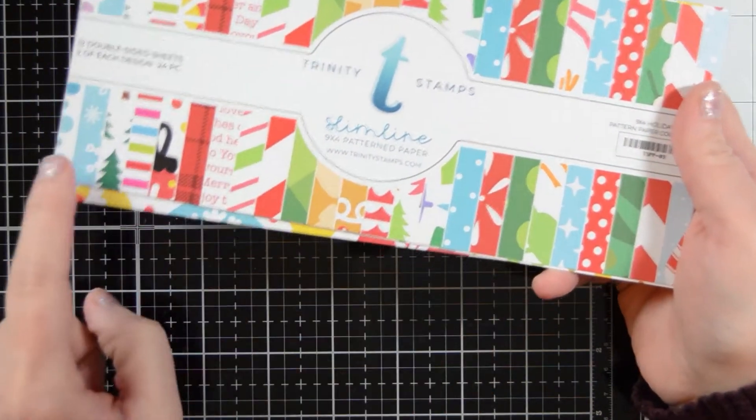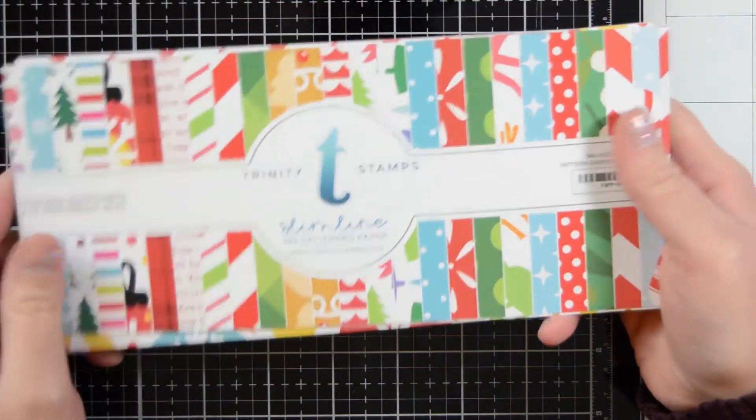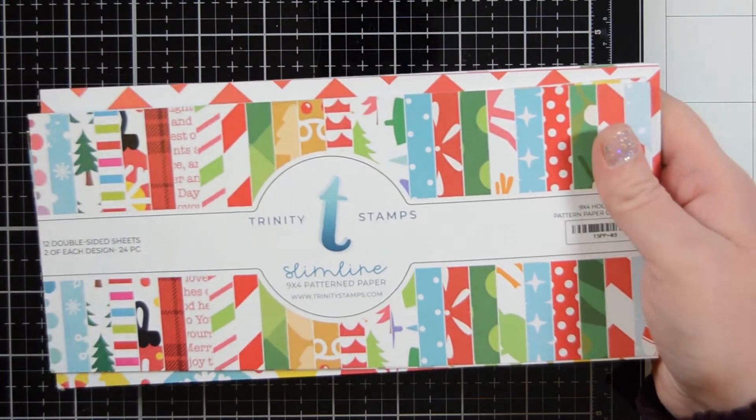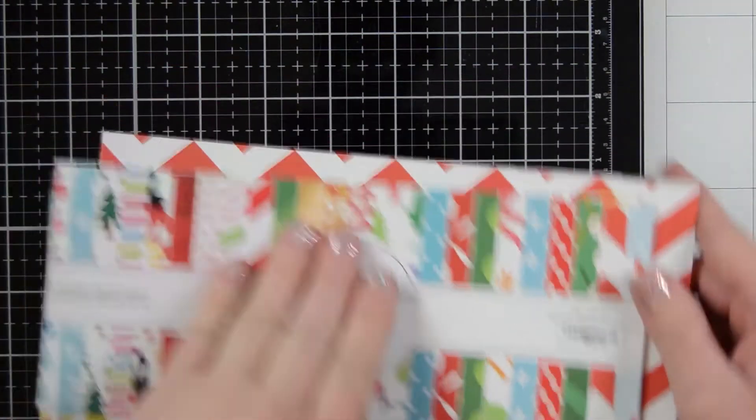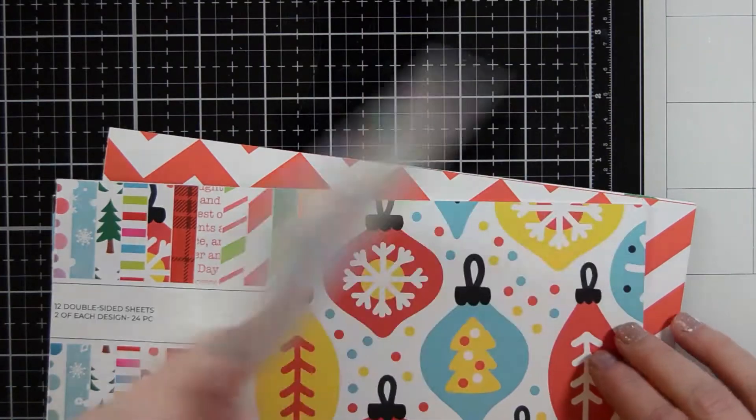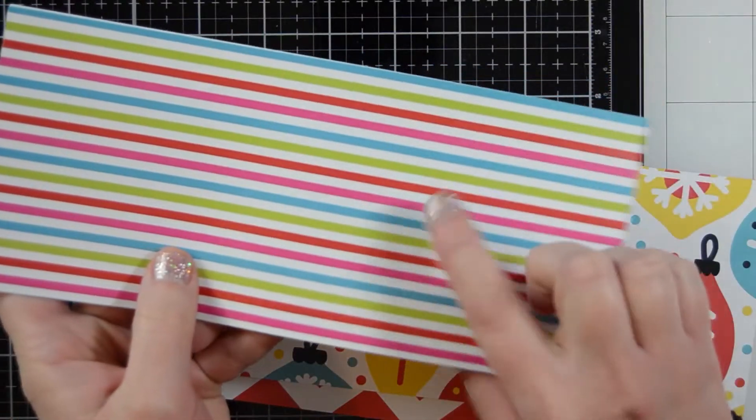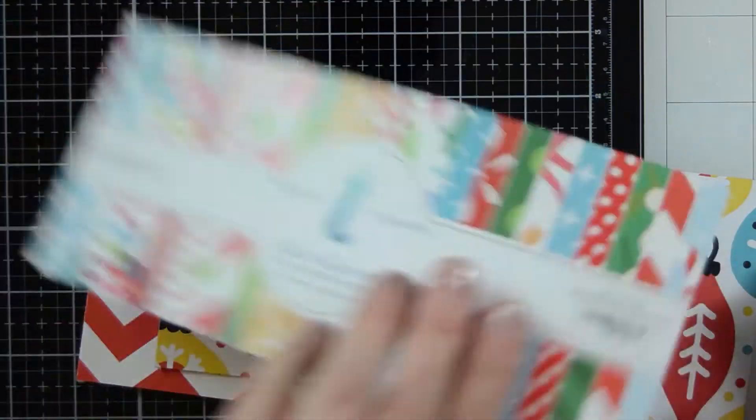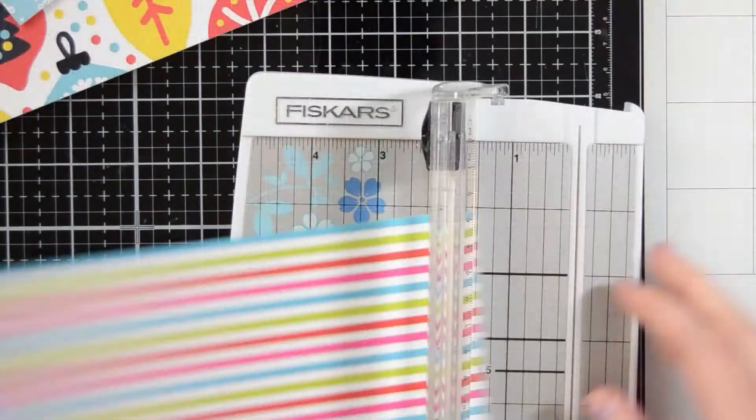So next I'm going to be using some paper from this slimline paper pad. Some of those blues in there I've used as well and then I'm also going to be making some rosettes. I thought that would be a lot of fun to add some more dimension to this and I'm going to use this rainbowy lined color. I thought that would be fun so it's not just blue. It gives a little punch.